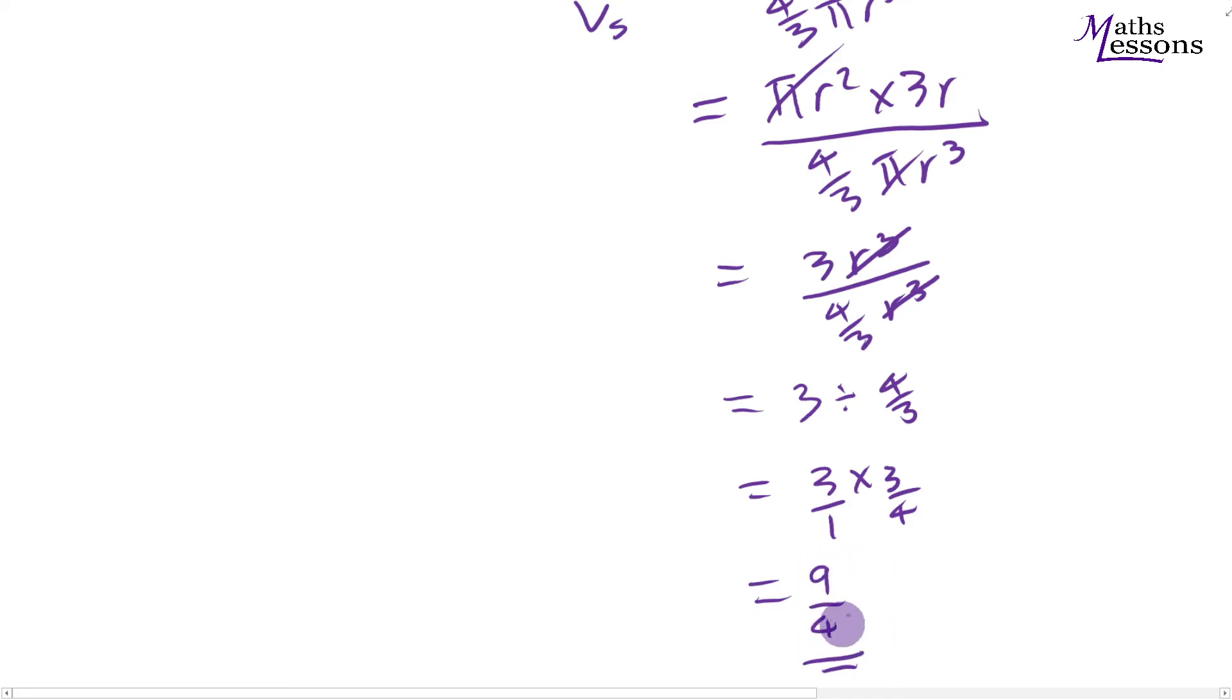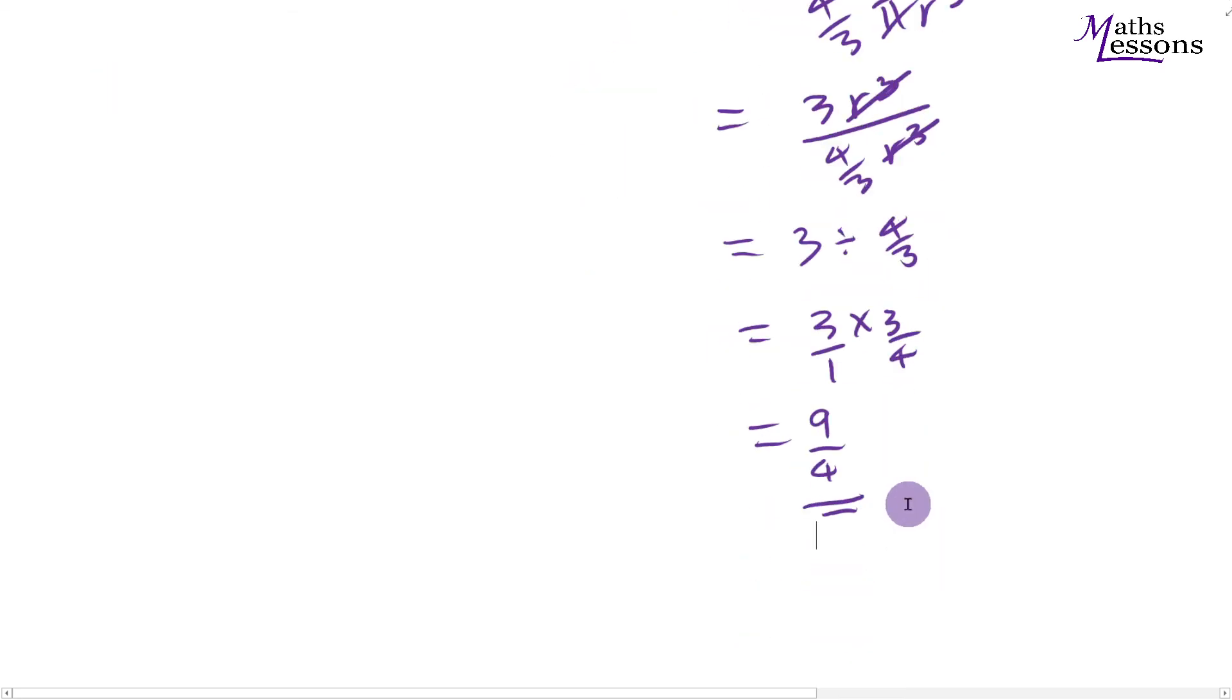So we can see the volume of the cylinder over volume of the sphere is equal to 9 over 4.